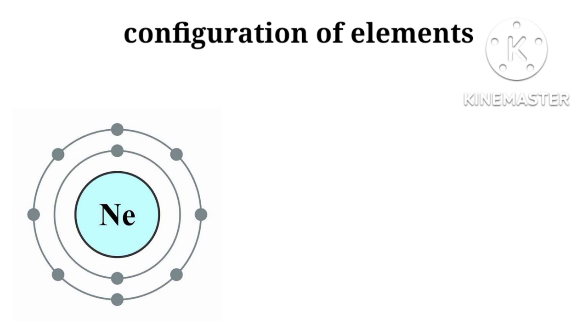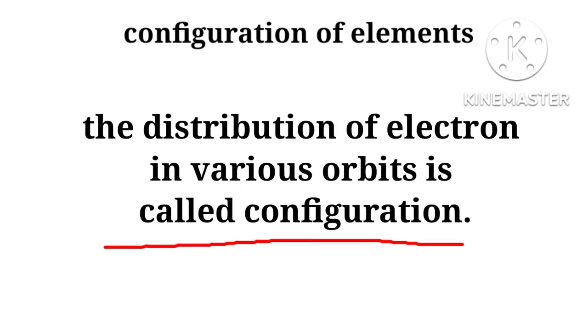As we know, an atom is the smallest particle of an element. It has a nucleus containing protons and neutrons. The nucleus is surrounded by revolving electrons in different orbits. The distribution of electrons in various orbits is defined as configuration.